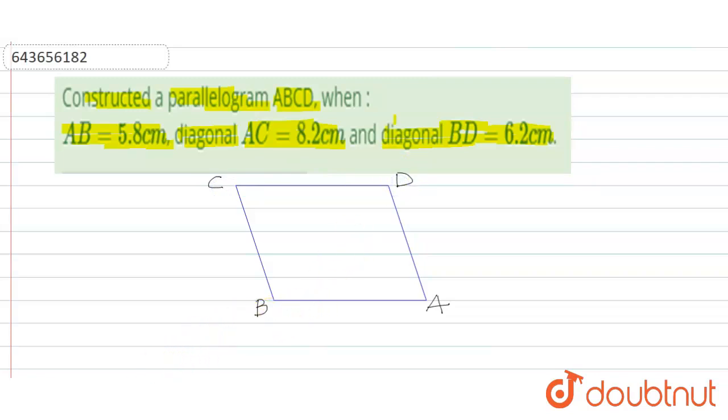First of all we will draw a line AB. So, suppose I have drawn a line AB, whose length is given here as 5.8 cm.